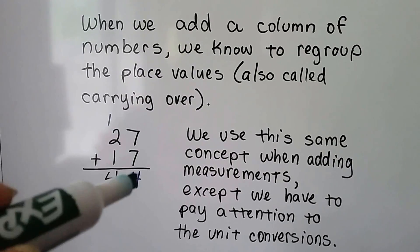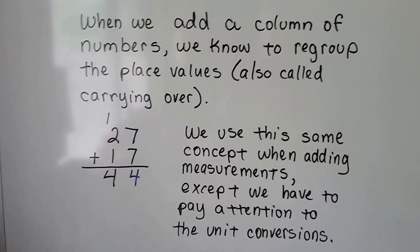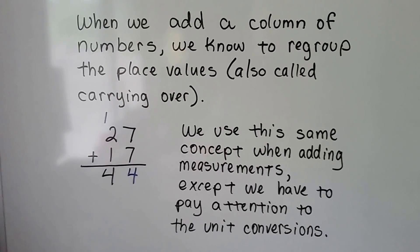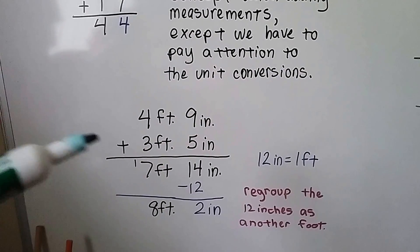We use the same concept when adding measurements, except we have to pay attention to the unit conversions. If we had 4 feet 9 inches and we want to add 3 feet 5 inches, we have to remember that 12 inches is a foot.